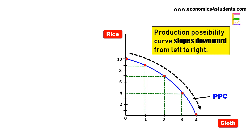So if we want to increase the production of one good we will have to reduce the production of other good. Let us understand this concept with the help of a simple example.